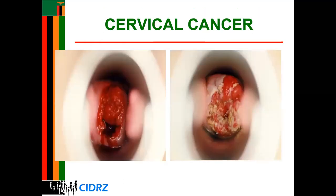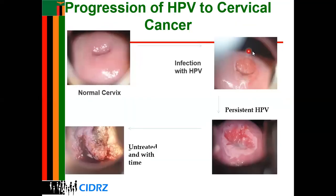This diagram shows a cervix that is inflamed due to the presence of HPV. If you go for screening and visualize the cervix, you may find it is highly inflamed. A normal cervix looks different — after HPV infection it becomes inflamed with discharge, and if untreated it continues growing, eventually affecting the entire cervix and potentially spreading to other parts.